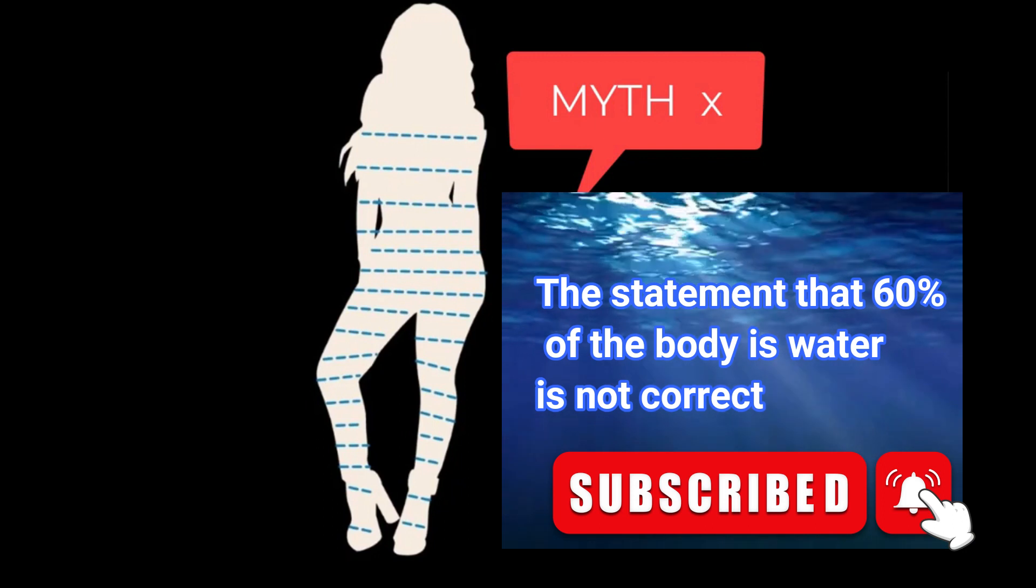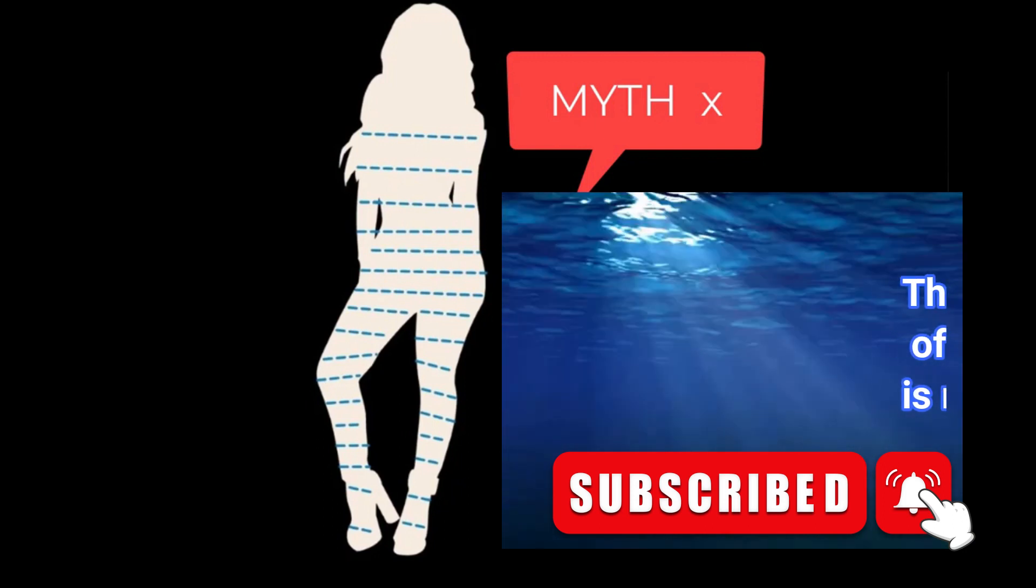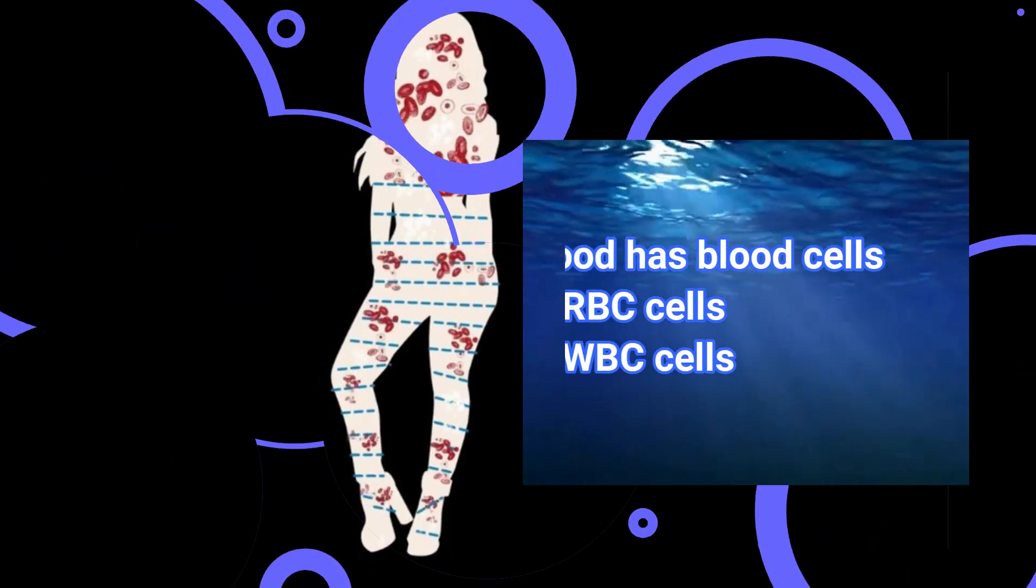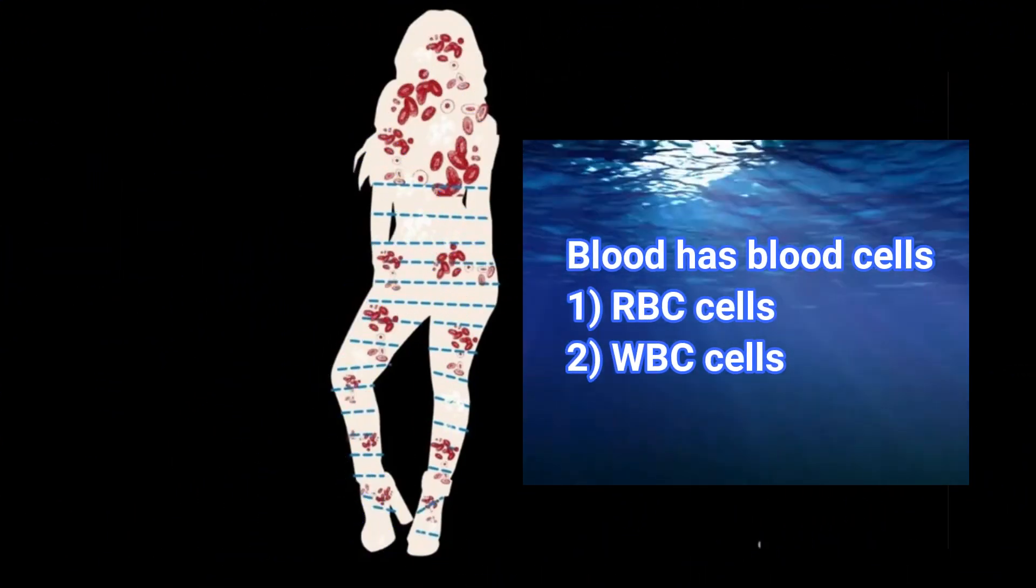In fact, I'll tell you what our body has. If you talk about blood, blood has blood cells. It has RBCs, WBCs.